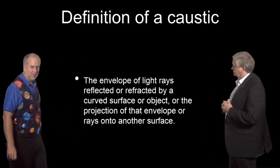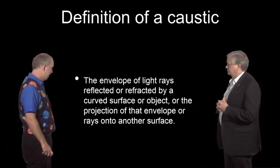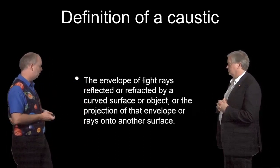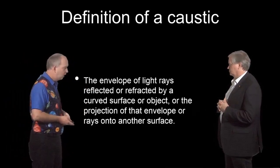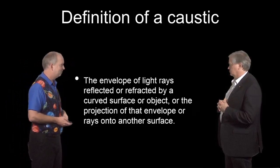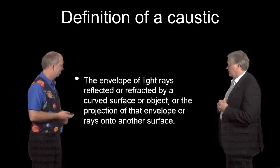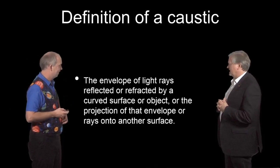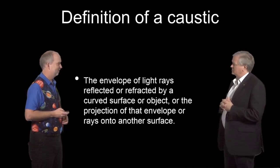So here's what Wikipedia said: a definition of a caustic is envelope of light rays reflected or refracted by a curved surface or object. What does that mean? Okay so I think we know what everything but the envelope, that sounds like an interesting term what does envelope mean?